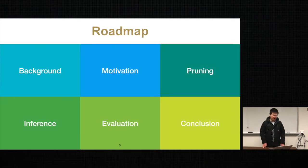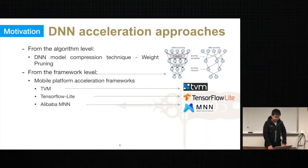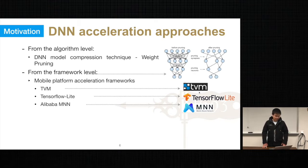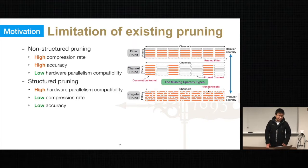Now let's move to the motivation part. There are several DNN acceleration approaches. For the algorithm level, one of the most innovative techniques is DNN model compression. It can result in a significant reduction in model size, and computation is also reduced with the reduction of weight. From the framework level, there are also several end-to-end DNN acceleration frameworks targeting mobile platforms, for example TVM, TensorFlow Lite, and Alibaba MNN. However, these approaches still have some limitations. There are two main kinds of weight pruning: non-structured pruning and structured pruning.